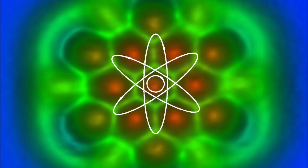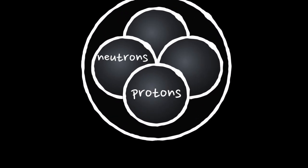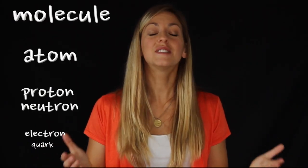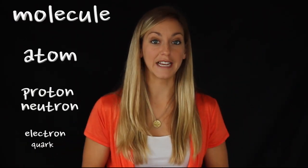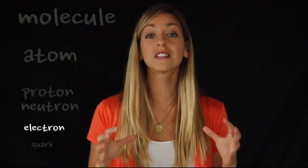We know that atoms are even smaller than these molecules, and atoms have electrons and protons and neutrons, and protons have quarks. How far down can we keep going? Let's zoom back out for a second. We couldn't image this molecule with visible light — and to be honest, we couldn't even resolve these cells with visible light. Instead, this image was made with electrons.